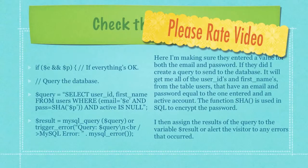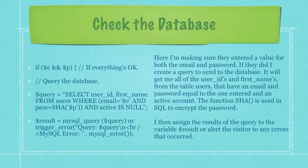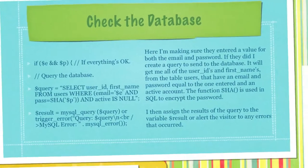Here I'm performing the same operations I did with the email address except here I'm validating a password. Here I'm making sure they entered a value for both the email and password. If they did, I create a query to send to the database. It will get me all of the user IDs and first names from the table users that have an email and password equal to the one entered and an active account. The function SHA is used in SQL to encrypt the password. I then assign the results of the query to the variable result or alert the visitor to any errors that occurred.